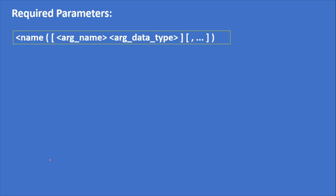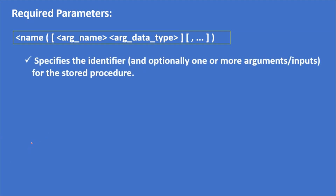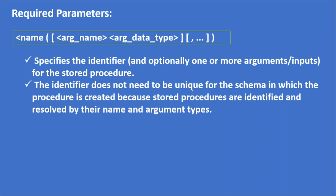Here are the required parameters. Name is a required parameter, and these are the rules you have to follow while giving the name. Specify the identifier for the stored procedure — the identifier does not need to be unique for the schema in which the procedure is created, because stored procedures are identified and resolved by name and argument types. You can give the same procedure name multiple times — this is called overloading — and the correct procedure is called based on the number and type of arguments.